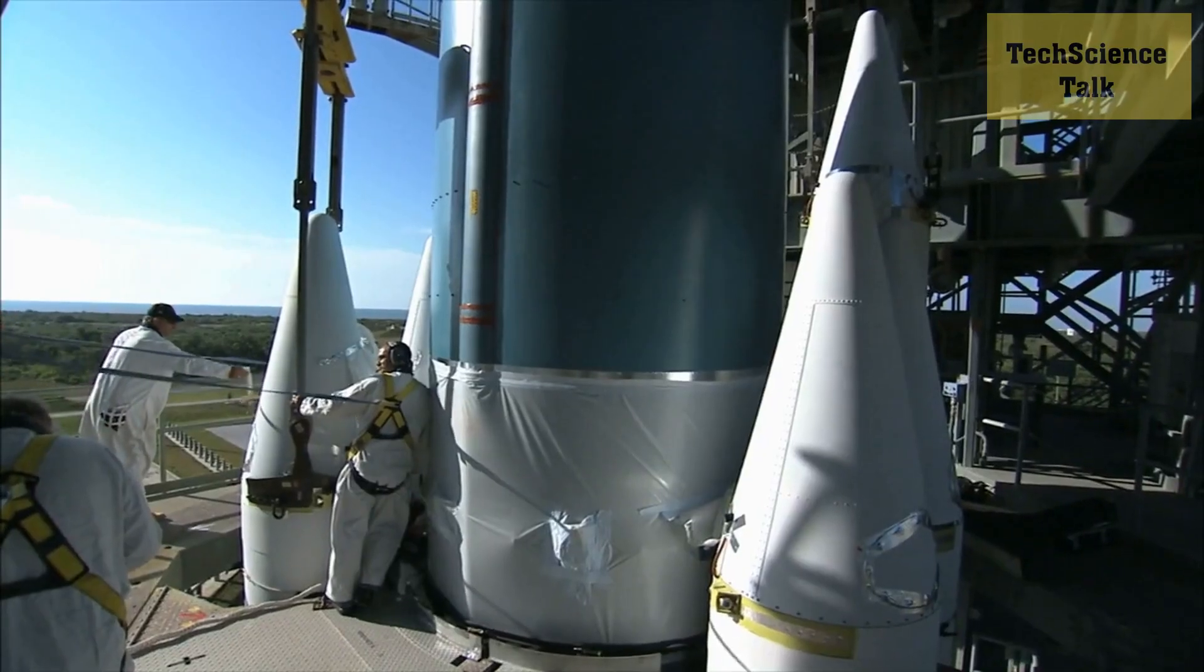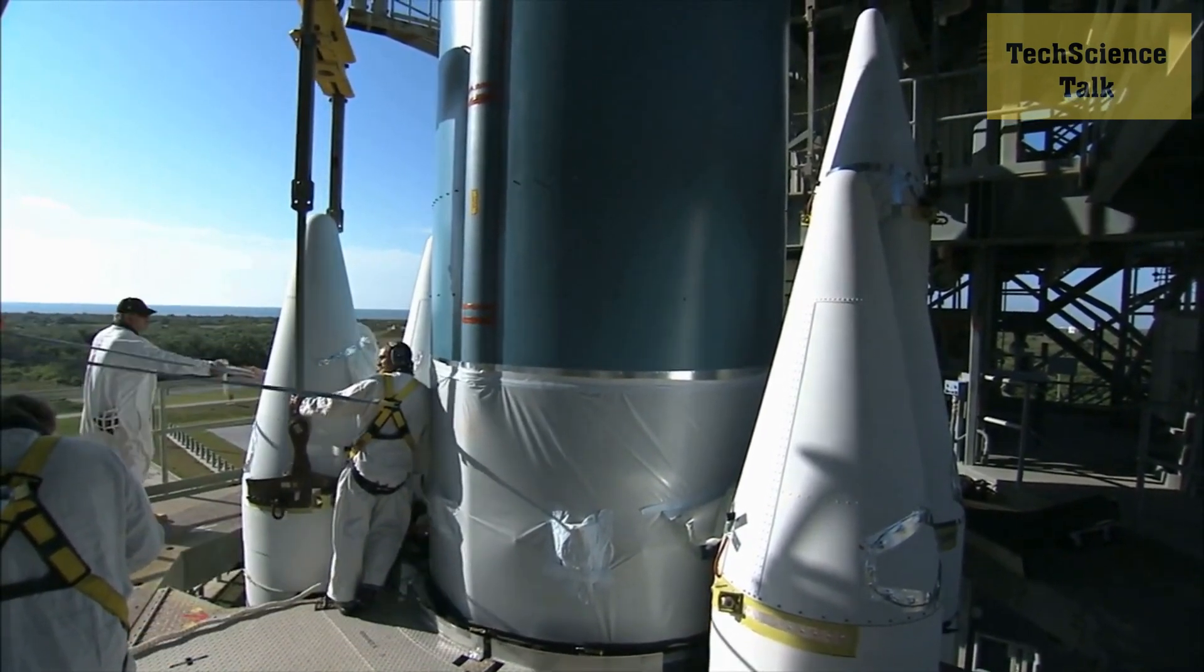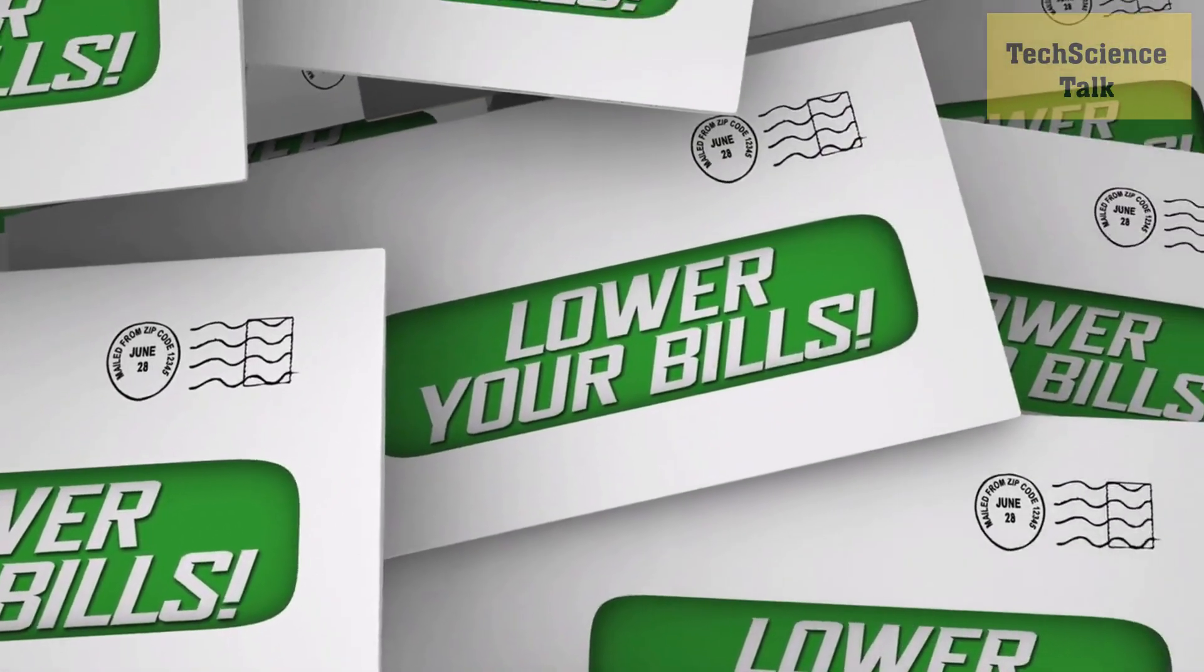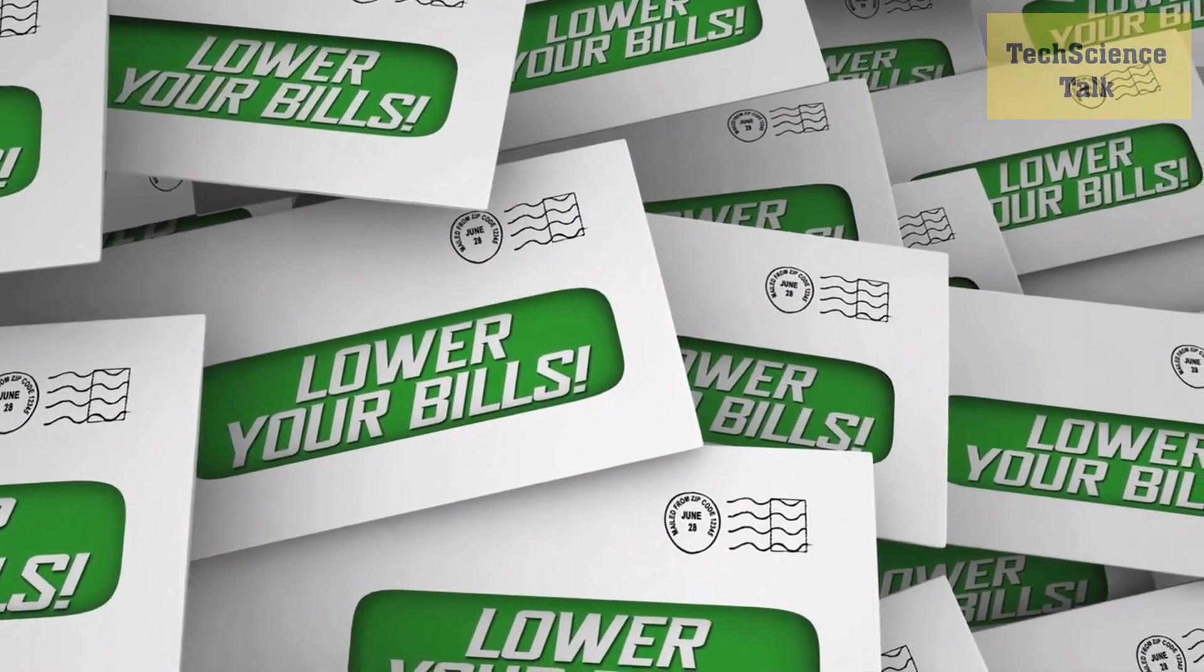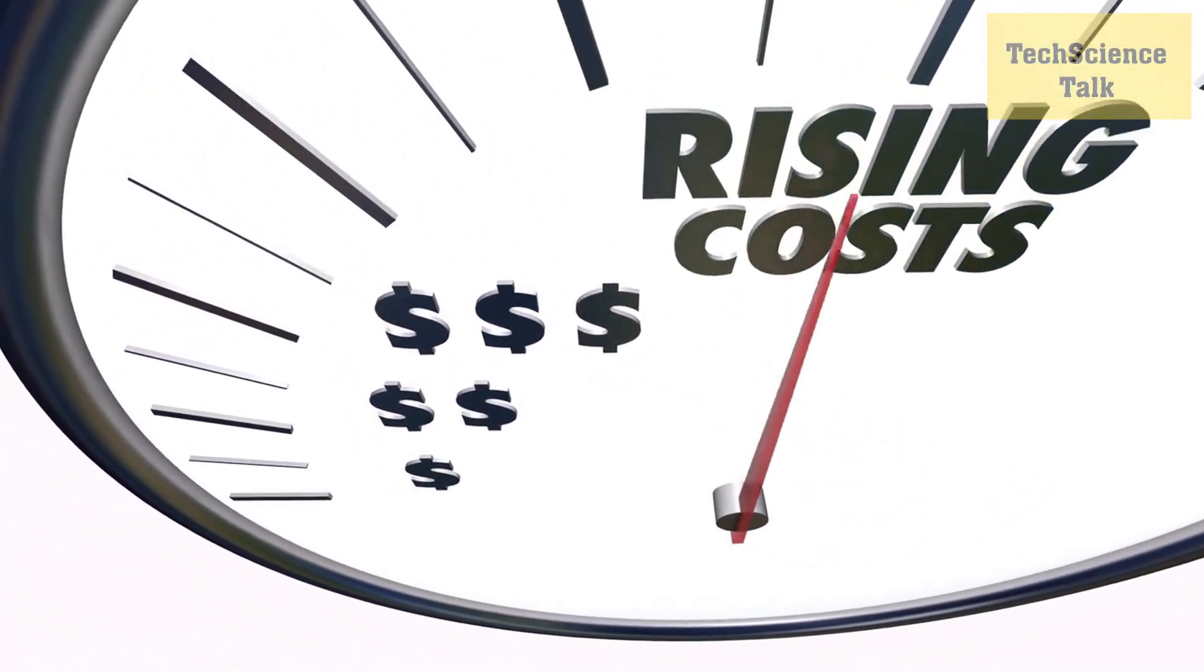These parts can be lighter, stronger, and more durable than traditionally manufactured parts, leading to improved performance and efficiency in spacecraft and aircraft. In addition, 3D printing can reduce manufacturing time and costs by eliminating the need for expensive molds and tooling. In architecture, 3D printing is being used to create scale models and even full-size structures.